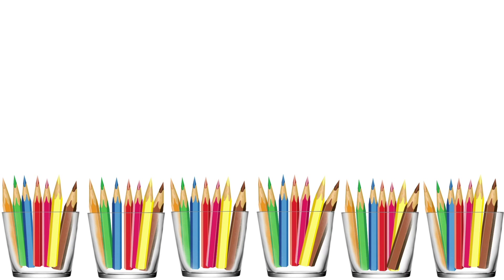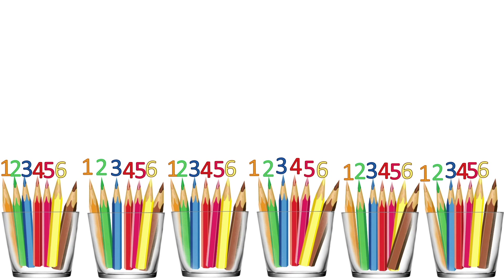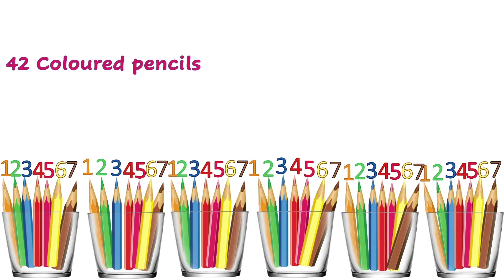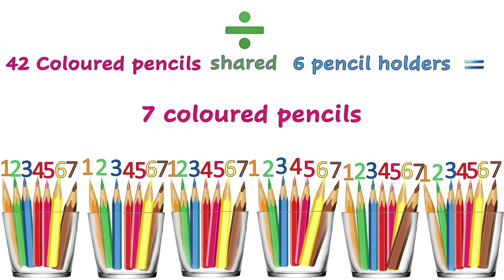Now let's count how many pencils are in each pencil holder: one, two, three, four, five, six, seven. So 42 colored pencils shared equally between six pencil holders equals seven colored pencils.